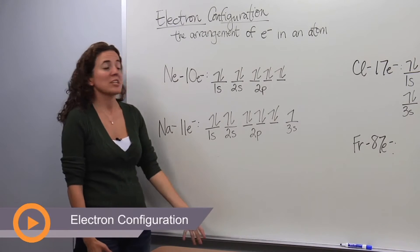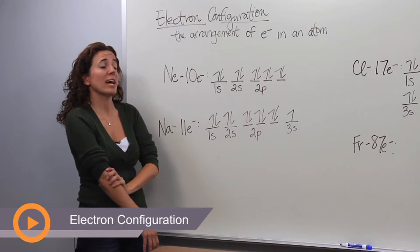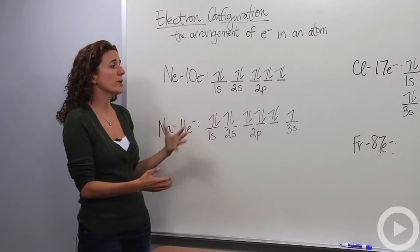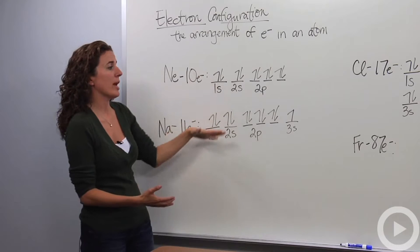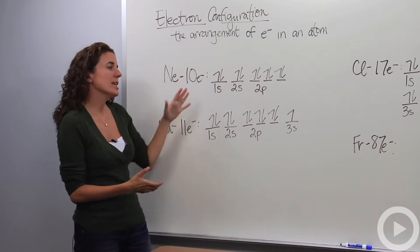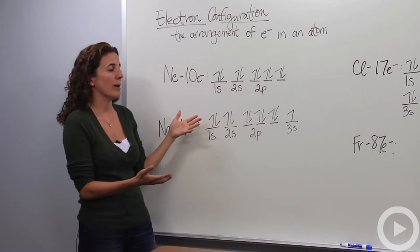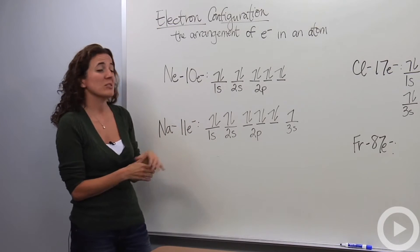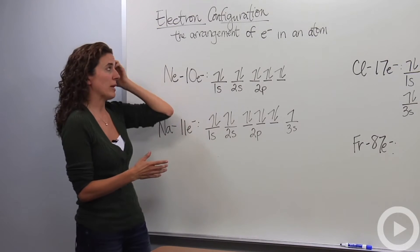Alright, so let's talk about electron configuration. Electron configuration is the arrangement of electrons in an atom. Earlier, before we talked about orbital diagrams, and up here we actually have a bunch of orbital diagrams, but instead of having to write all this out to describe where electrons go and how they fit into the atom, we're actually going to make it shorthand, and that way we're going to do electron configuration.